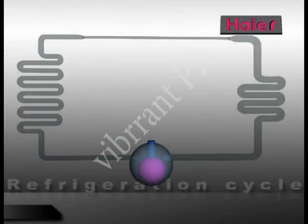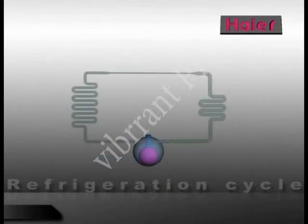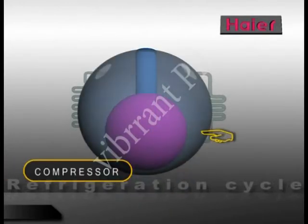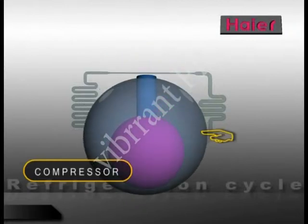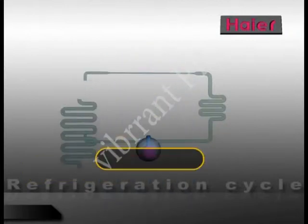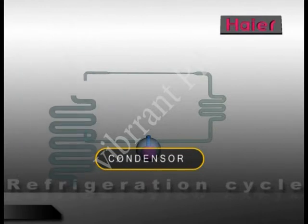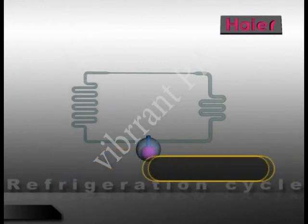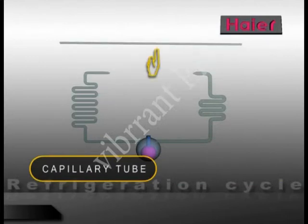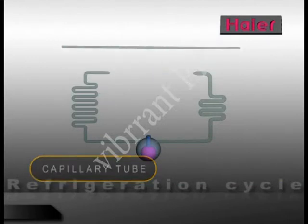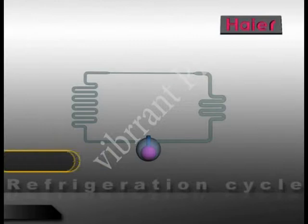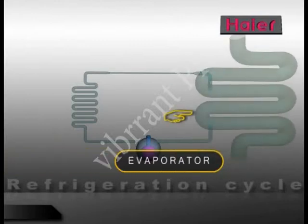This is a three-dimensional diagram of the refrigeration cycle. The vapor compression cycle consists of a compressor, condenser, capillary tube, and the evaporator or the cooling coil.